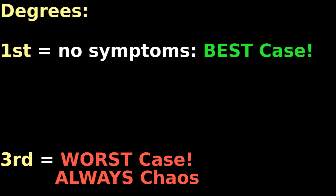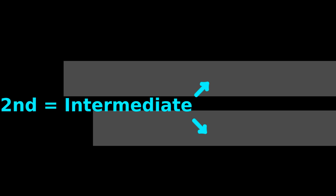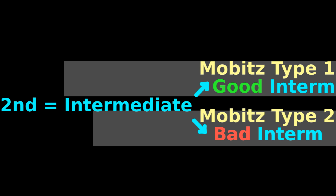The first and third AV blocks are the best and worst case scenarios. The second degree of AV block is intermediate, and we divide it into good intermediate, or Mobitz type 1, and bad intermediate, or Mobitz type 2.